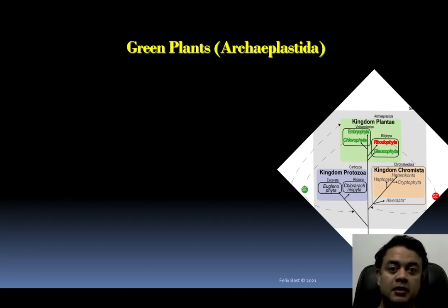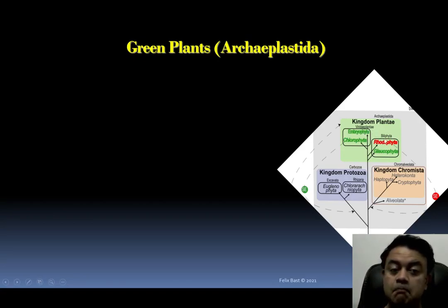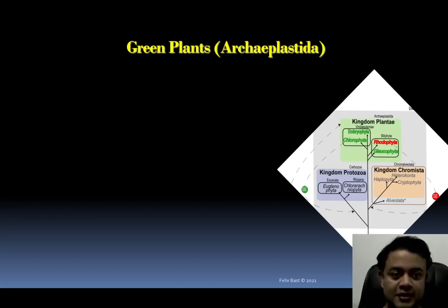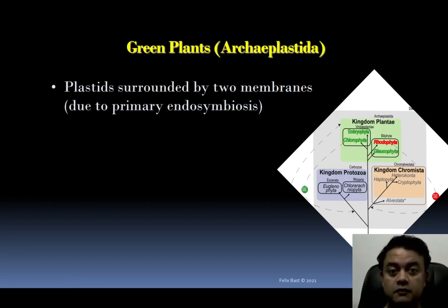Kingdom Plantae has Viridiplantae plus Biliphyta. Biliphyta comprises Rhodophyta and Glaucophyta. Rhodophyta is the red algae, as visible in this image — 'rhodo' meaning red. Glaucophyta is a kind of unicellular algae that has not been much studied.